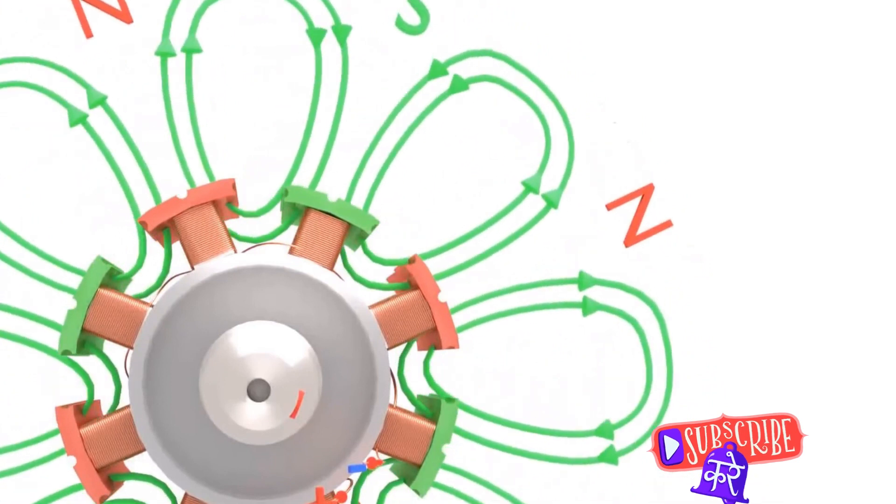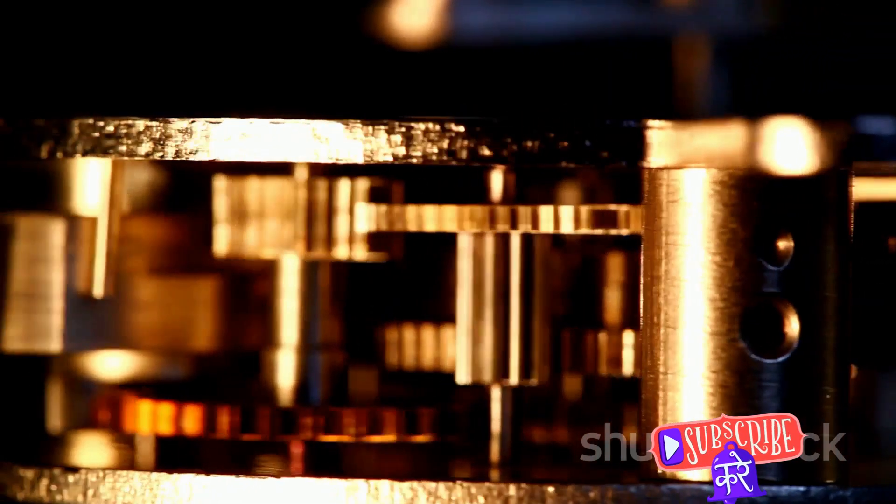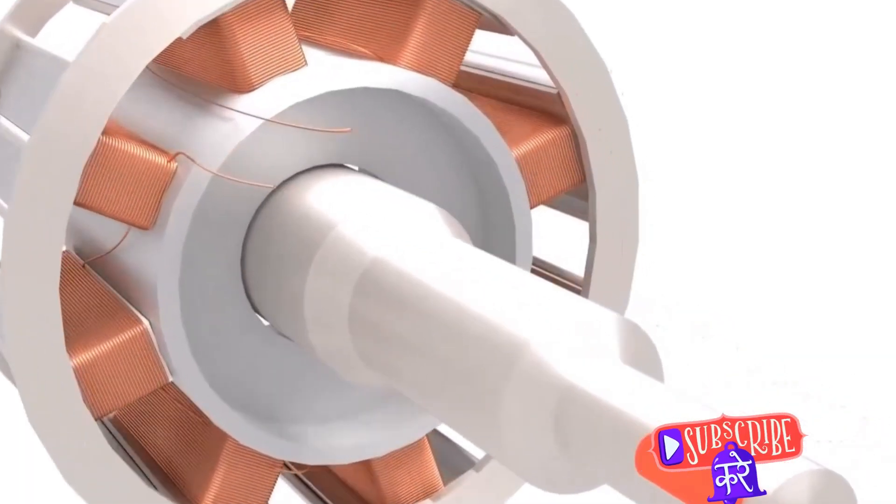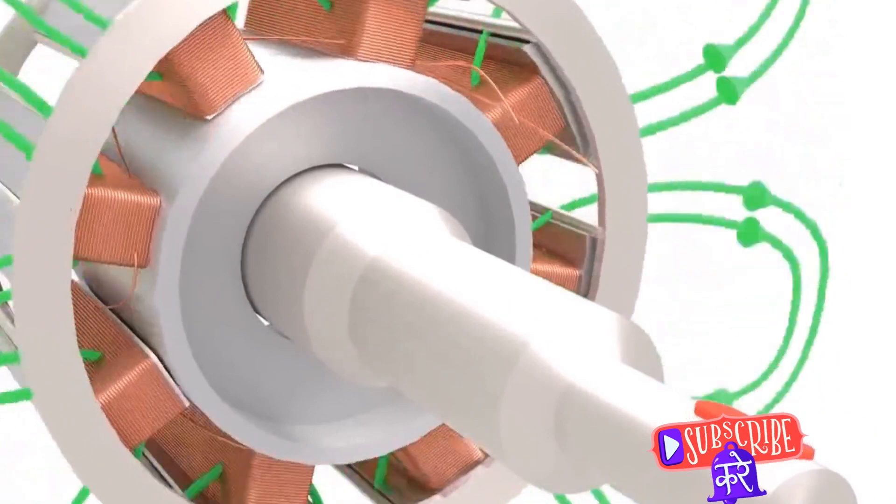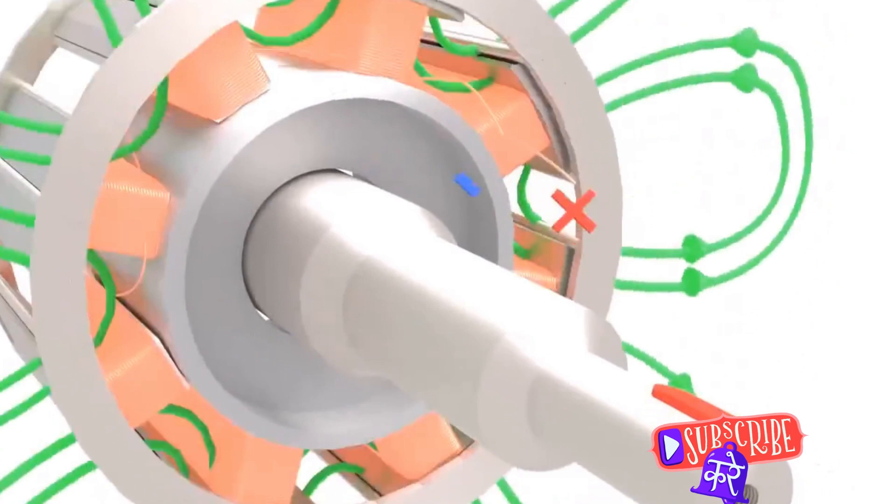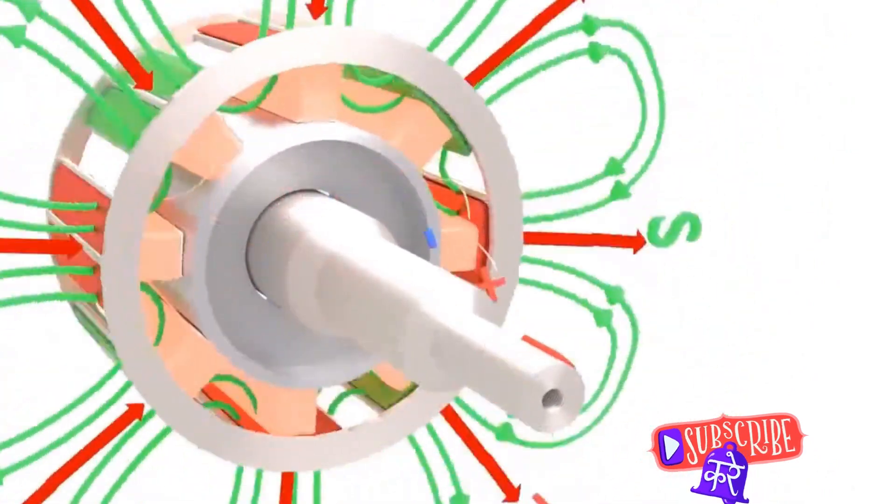But here's where it gets interesting. The alternating current changes direction periodically, and so does the magnetic field. This creates a rotating magnetic field that our rotor strives to follow. But the rotor isn't just a passive follower, it's more like a dance partner, matching step-for-step with the magnetic field.